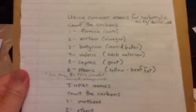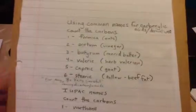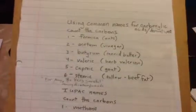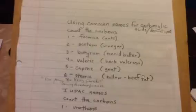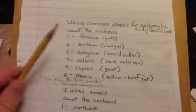So first of all when using common names to name carboxylic acids and the derivatives you'll need to memorize the names for how many carbons are there in the compound. So what you'll do for the first part of the name is you'll count the carbons.